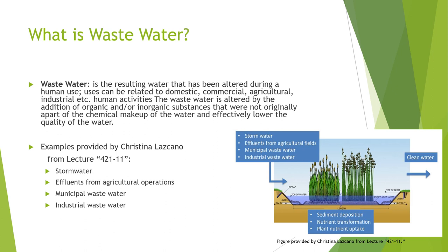Some examples of wastewater, but not all types of wastewater, are stormwater, effluents from agricultural operations, municipal wastewater, and industrial wastewater. Each type of wastewater will be contaminated with different types of combinations of suspended and or dissolved contaminants.